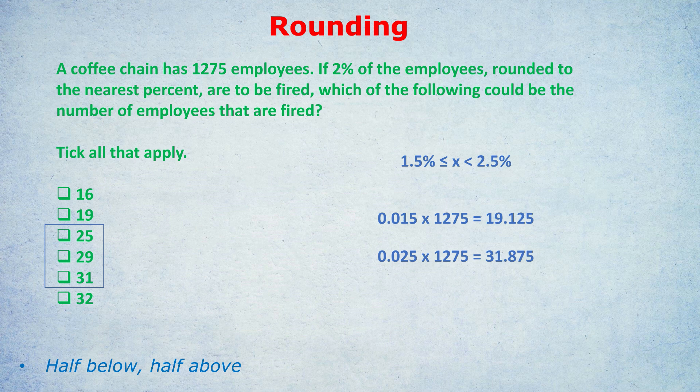Any of those three numbers could have been the number of employees fired. Obviously there are other numbers like 20, 21, 30 for example. In terms of the options given, which is typically the way they ask this kind of question, we would tick C, D, and E as the correct answers.